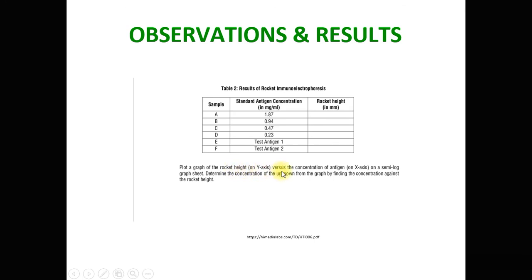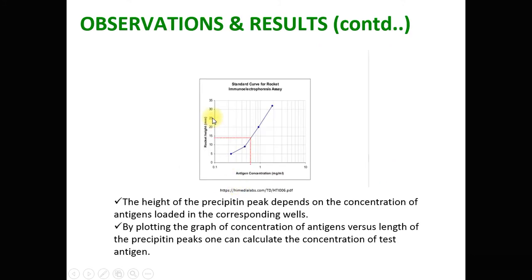The height is taken on the y-axis versus the concentration of the antigen on the x-axis. Not a normal graph paper but a semi-log graph sheet is used. On the y-axis there is a linear scale, while on the x-axis there is the semi-log scale. The height of the standard antigens is plotted, producing a straight line. The heights of the sample antigens are spotted and extrapolated to determine the concentration of the antigen. By plotting the graph of concentration of the antigen versus the length of the precipitin peaks, we can calculate the concentration of the test antigen.